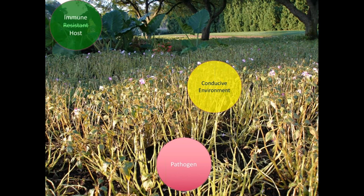Last but not least is the immune or resistant host. It's important not to confuse immunity with resistance. These Alocasias will never get impatiens downy mildew — that's immunity. Resistance is more like comparing Impatiens walleriana to Impatiens balsamina. Resistance can actually break down over time — we see this with roses, crab apples, and many other plants. It reinforces that you don't want to rely on any one process when managing plant disease.